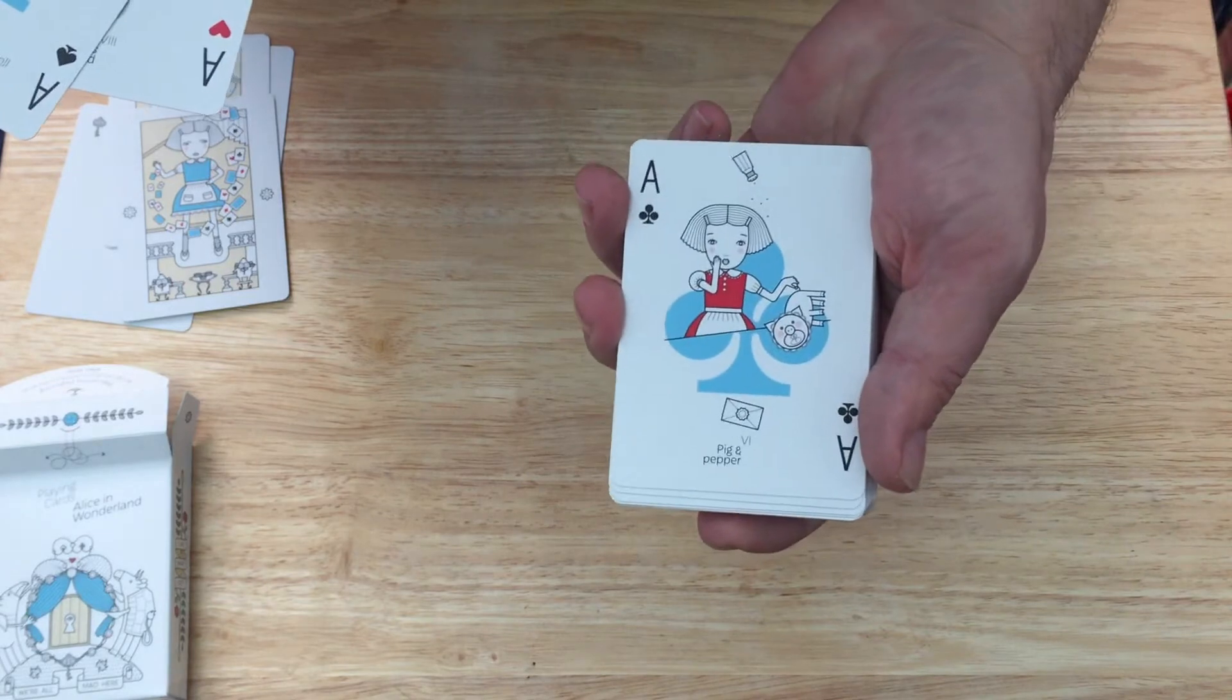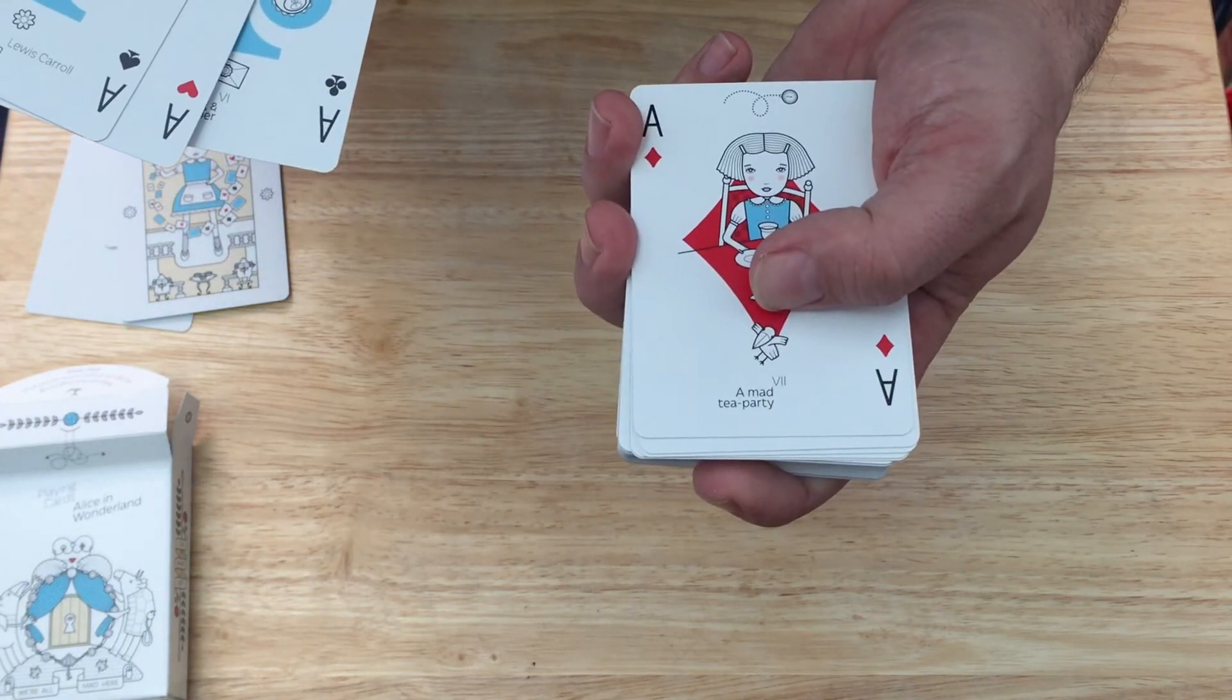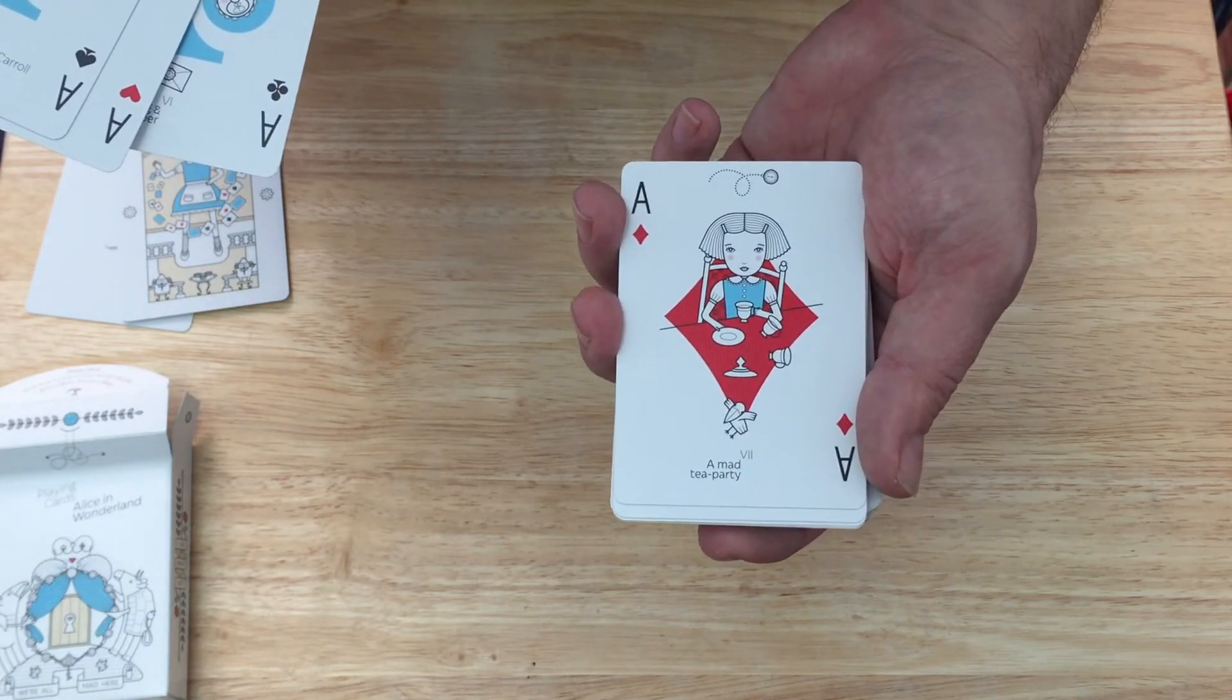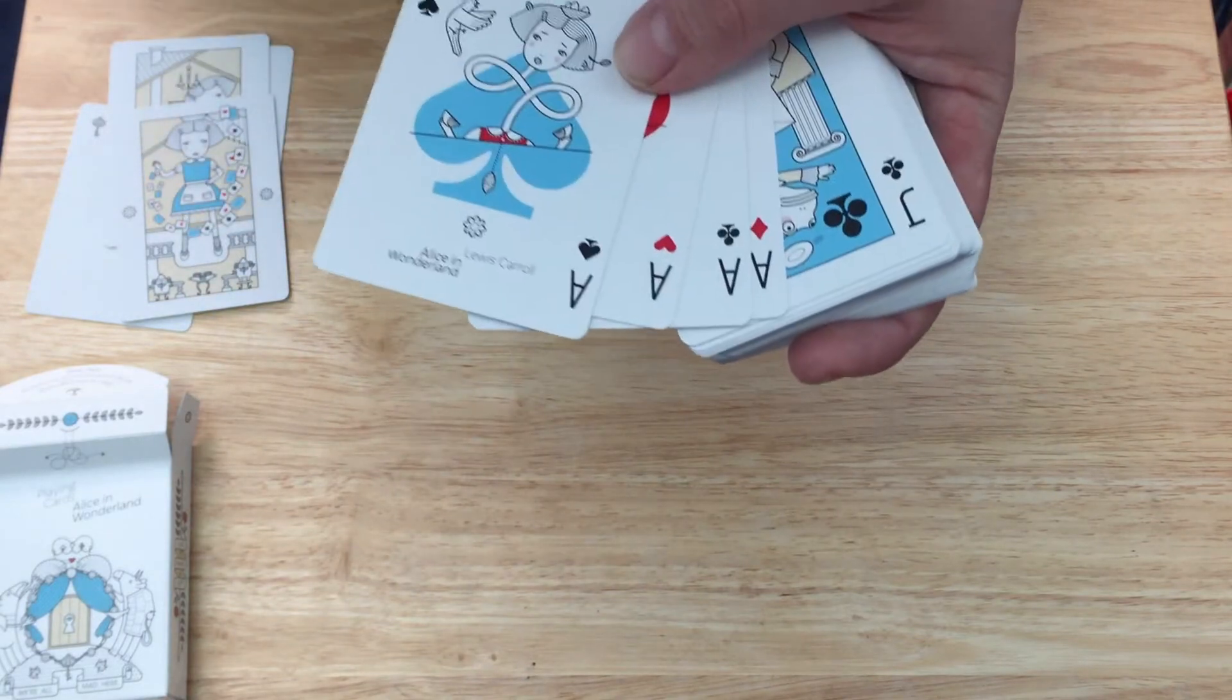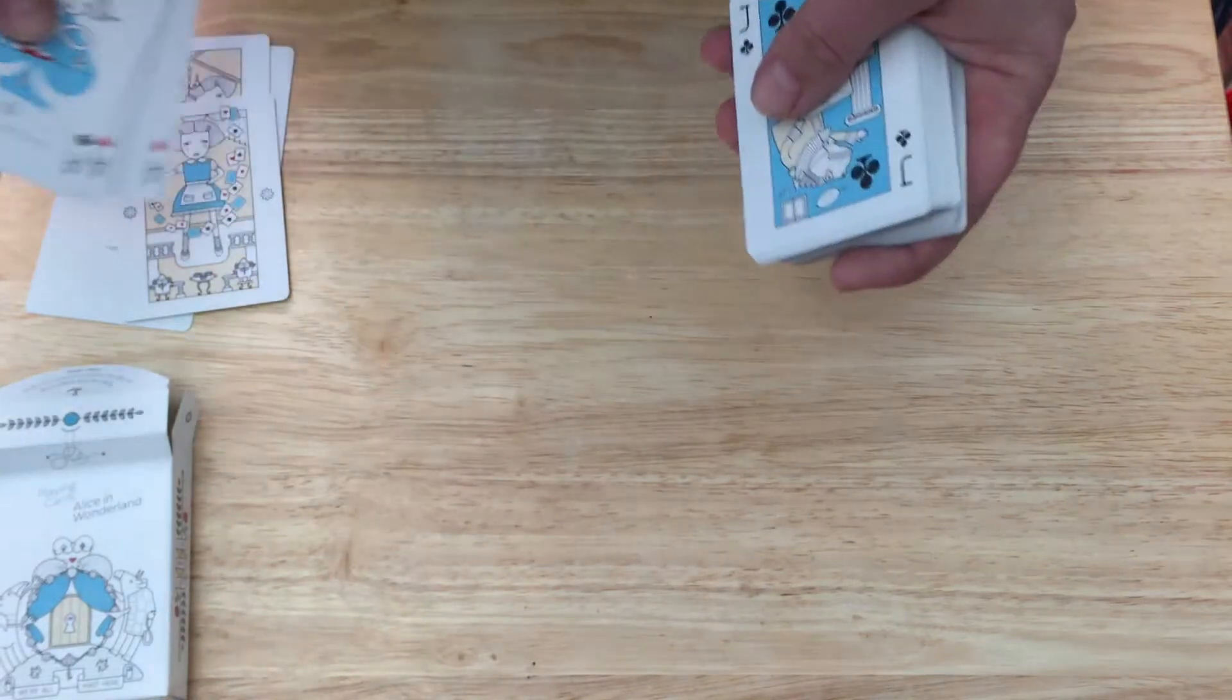This one is pig and pepper, and you see a pepper. And this one is a mad tea party number seven. Pretty cool fun aces that fit the theme. I do think the indexes could have been down closer to the corner just a little bit, but that's just a minor thing.